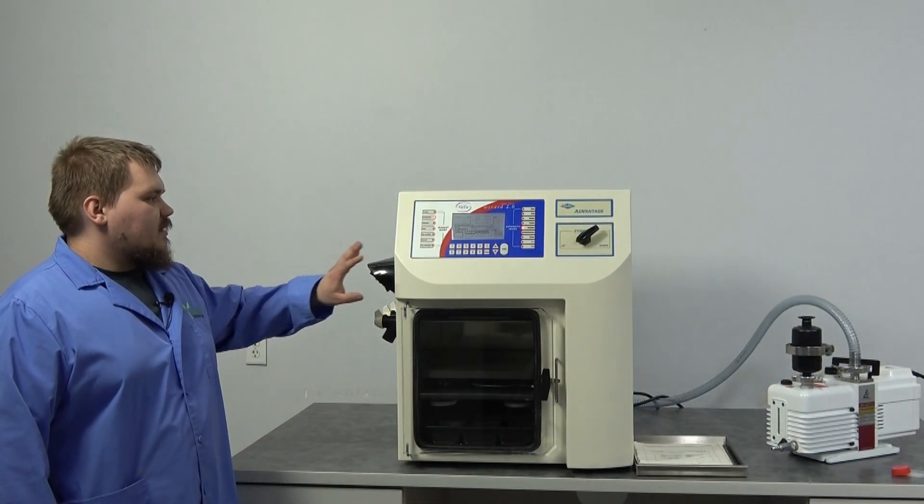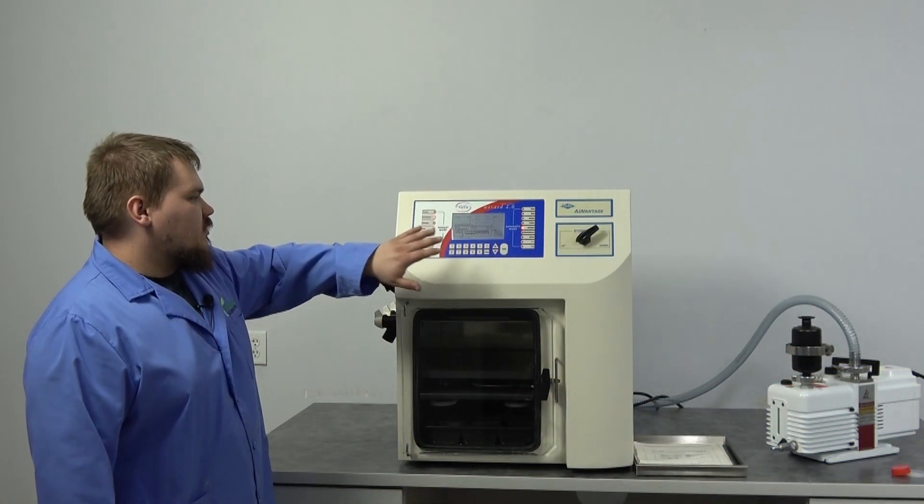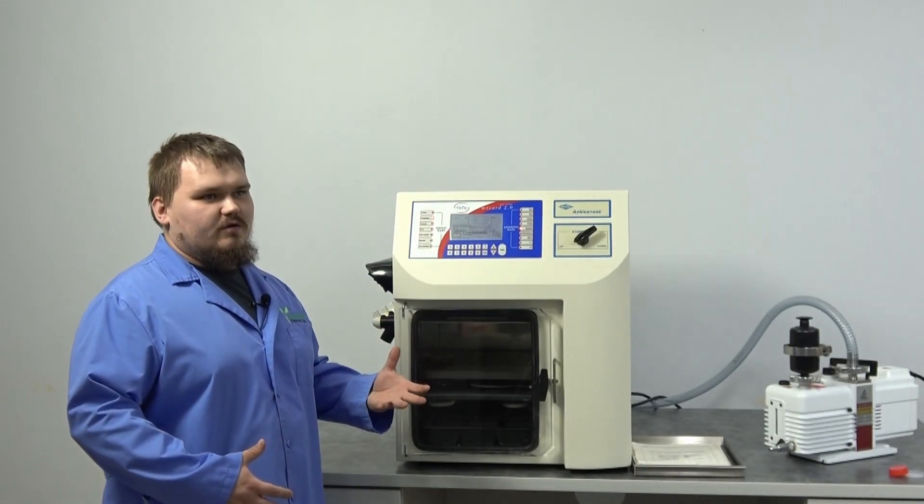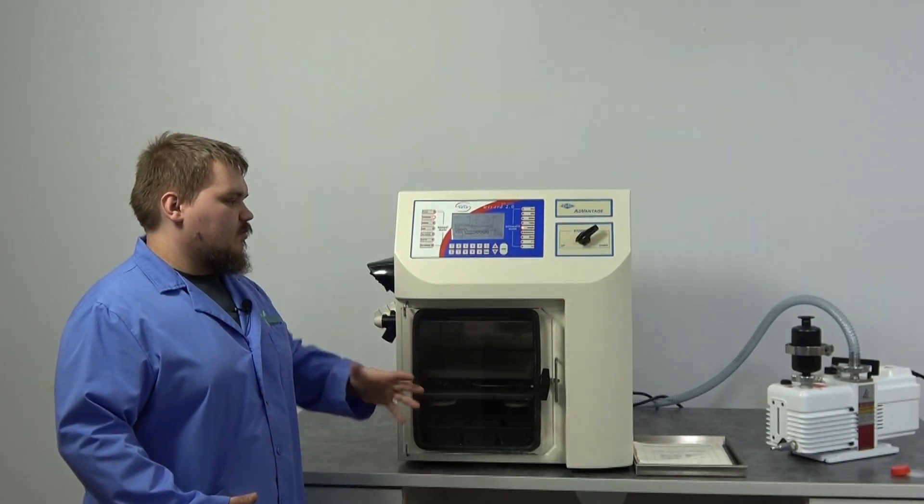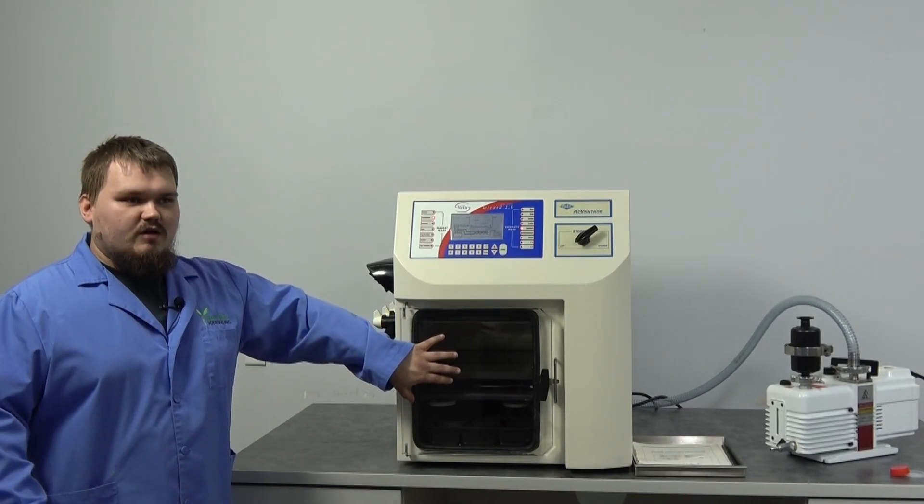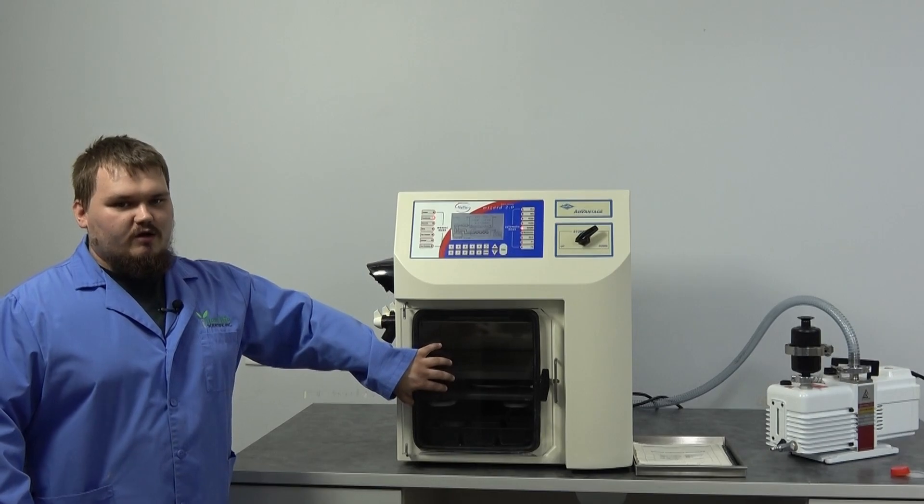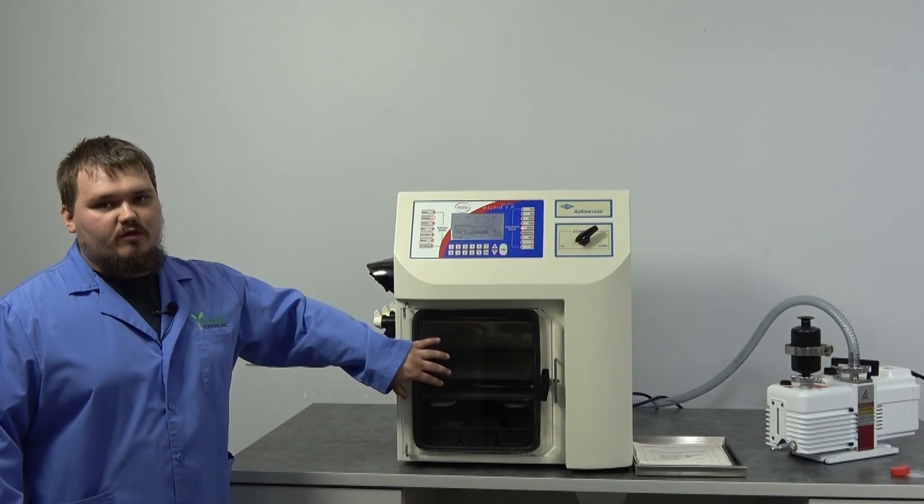Now that we're back from getting it down to temperature, you're going to notice that the machine didn't get quite down—it's a degree off. That is pretty normal with machines. Sometimes they can be a degree or two off, if not more, while it's not on any vacuum. That is perfectly normal.